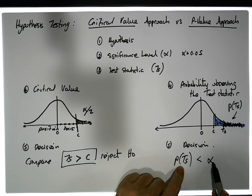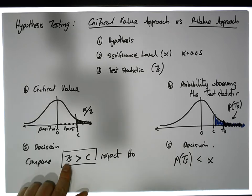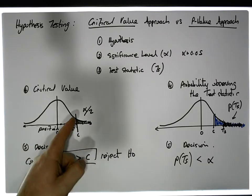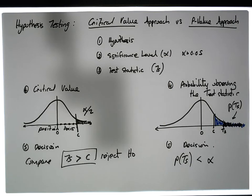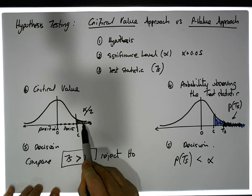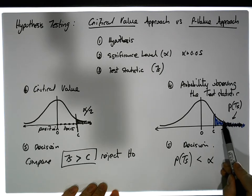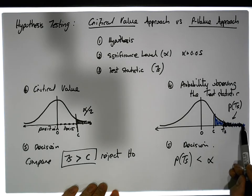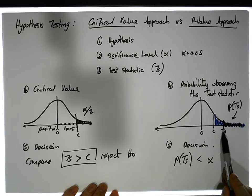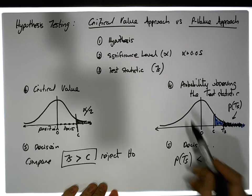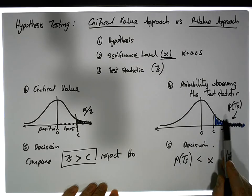So we have two ways to reject. First, compare the test statistic directly to a point on the horizontal axis — the critical value — which has a certain amount of area to its right defined by alpha. Or, convert everything to areas: compare the area to the right of the test statistic, which represents the probability of observing a result as extreme as observed, to the significance level alpha. We reject when that p-value area is smaller than alpha.